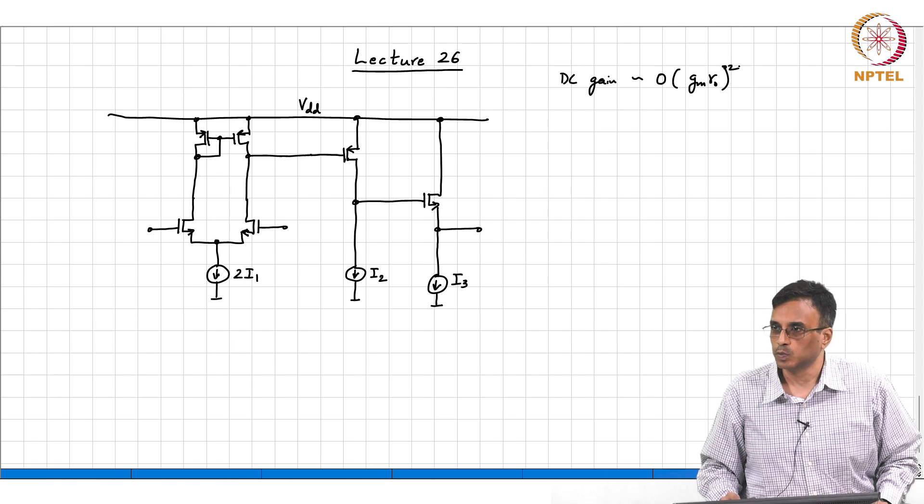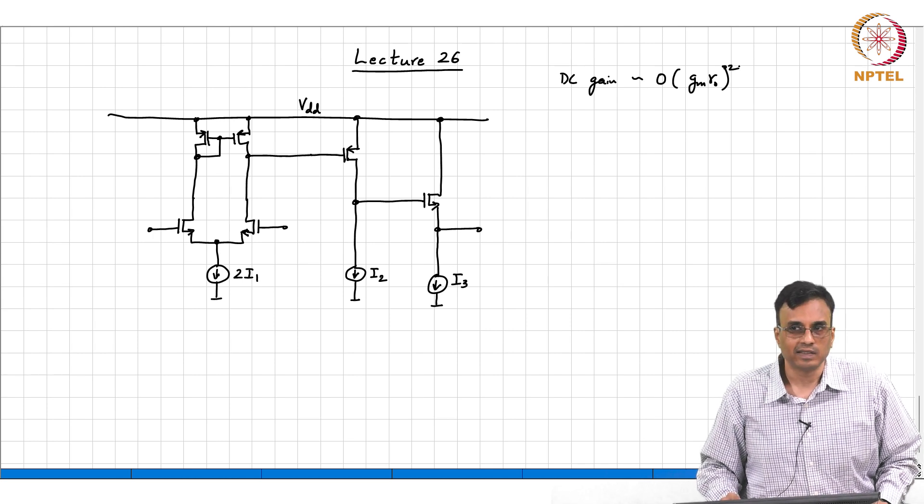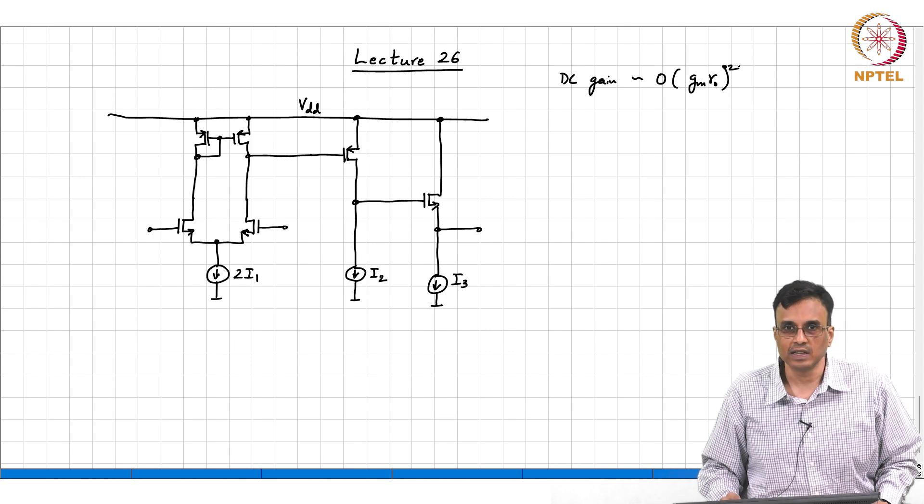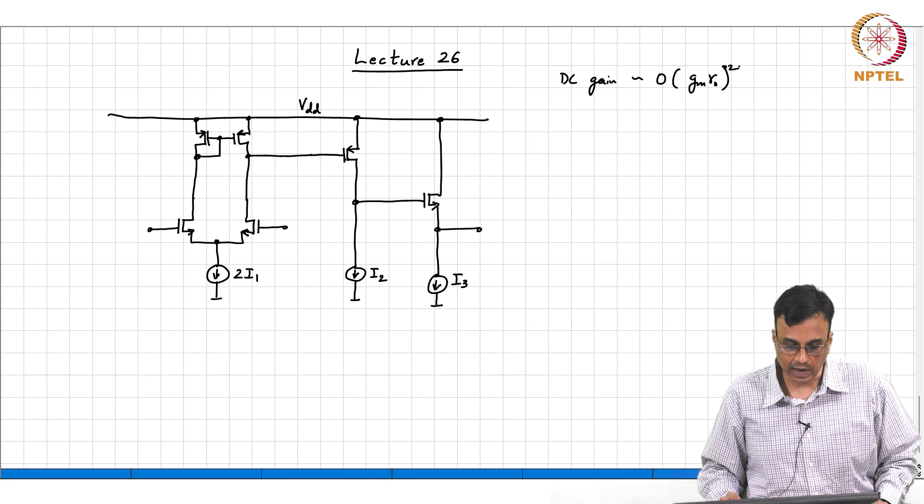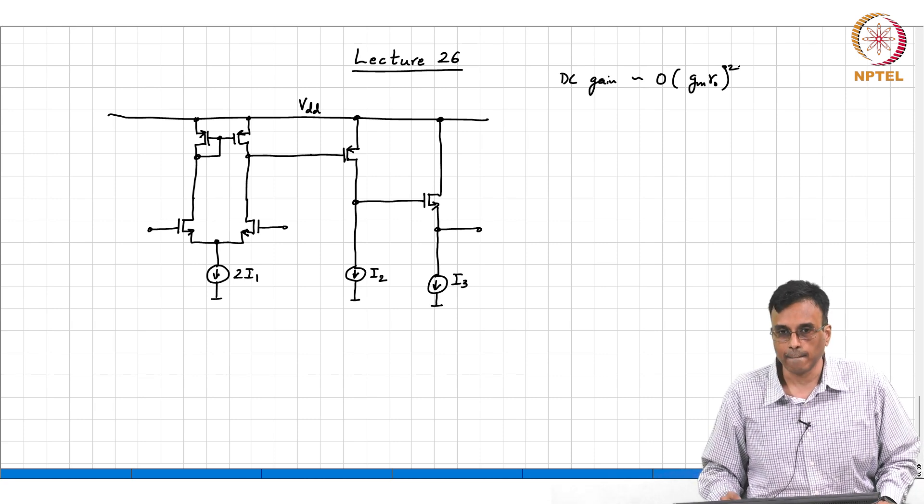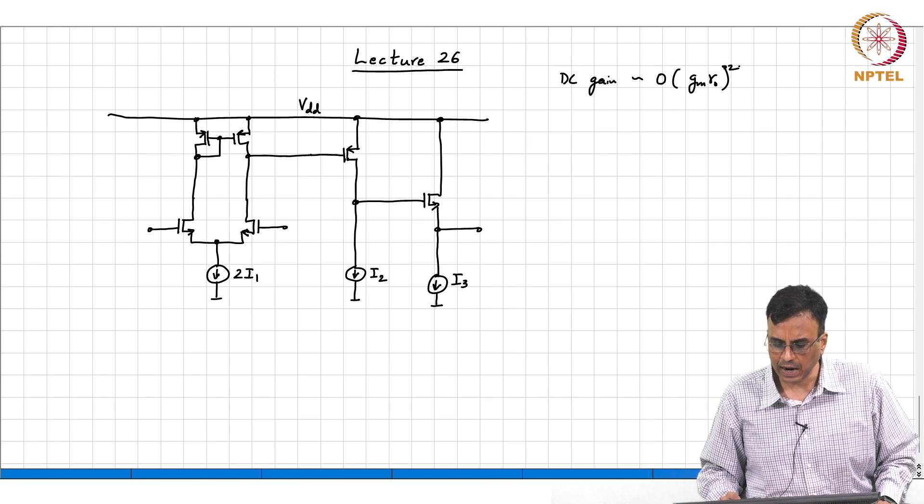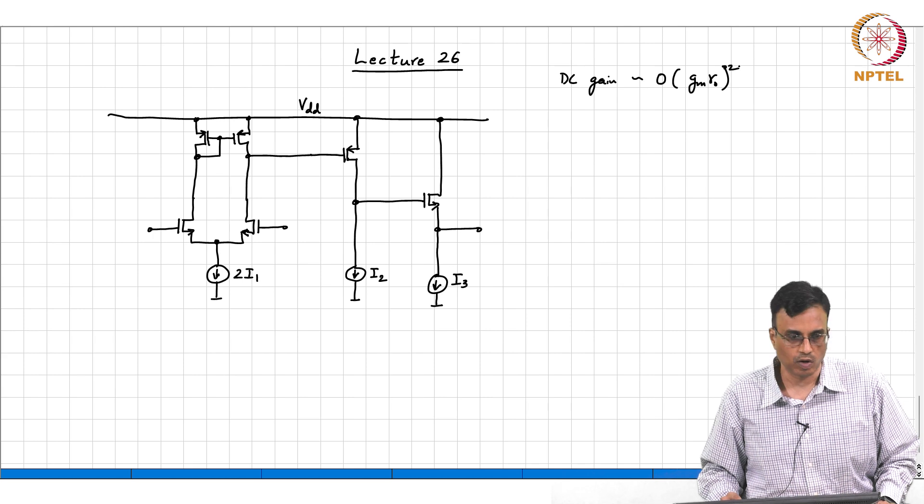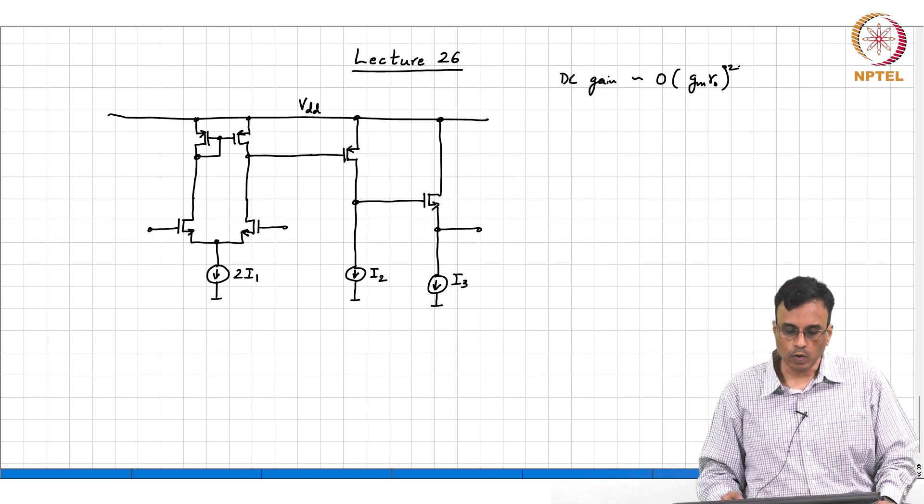And more importantly, we know why the circuit came about. It is not something that we just put on the board and say let us analyze this op amp. We know why each one of those components is there and why each type of transistor is used where it is. For the output stage, it does not really matter whether we use NMOS or PMOS common drain amplifiers.